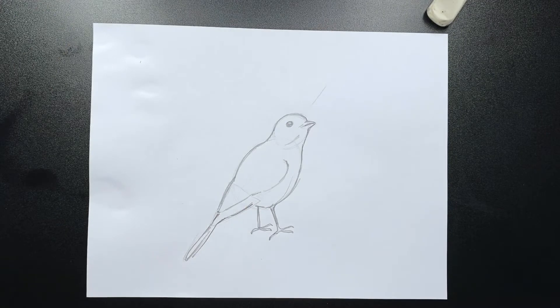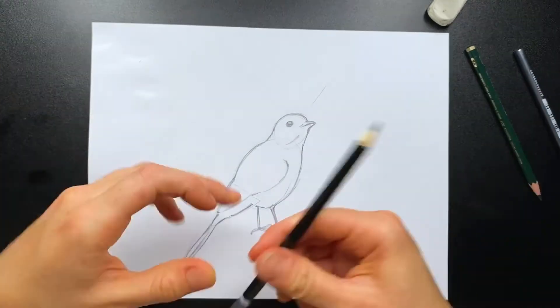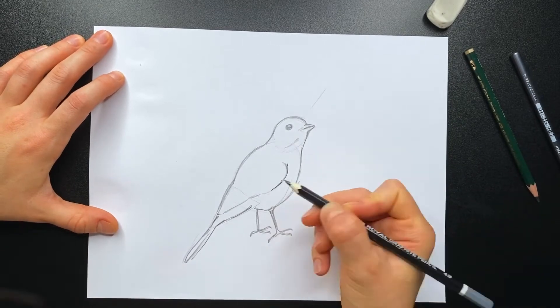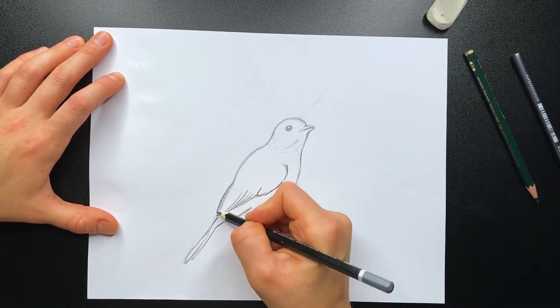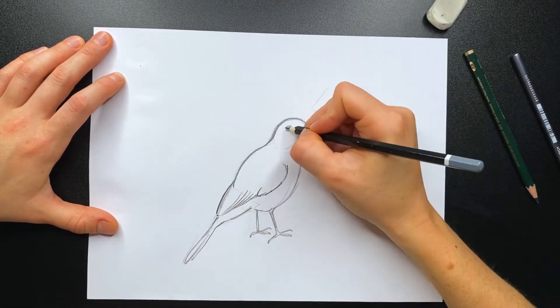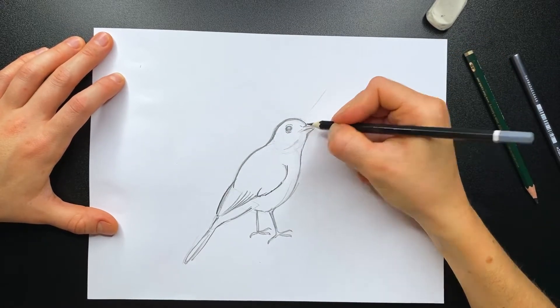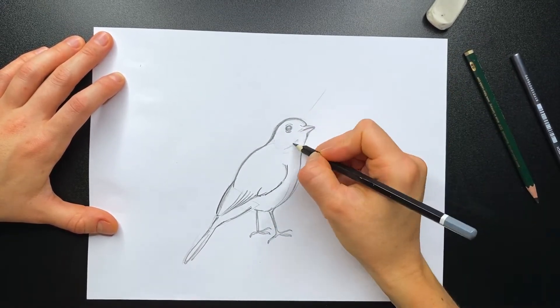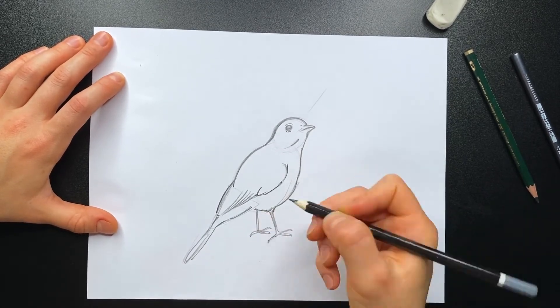Our third step would be to highlight our lines with a softer pencil, as well as add some details. Any pencil between 2B and 6B would work well. This is the easiest way to draw animals realistically. You start from proportions and simple shapes, making sure you get all the measurements right. And only then you move to details, shading and coloring.